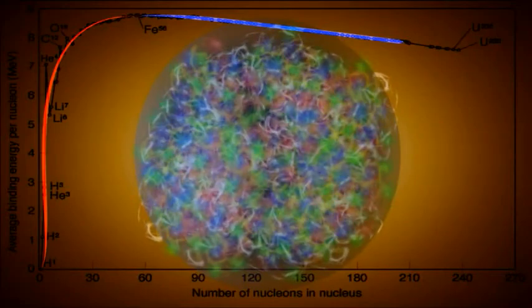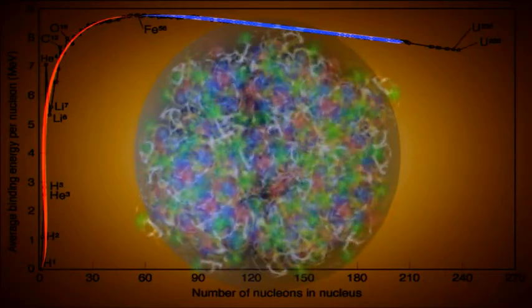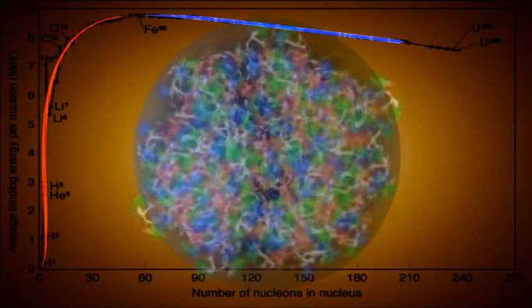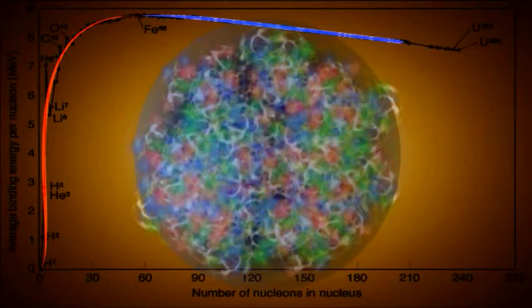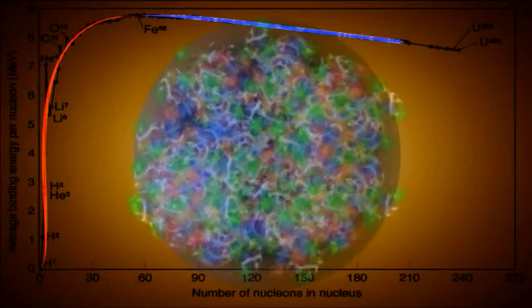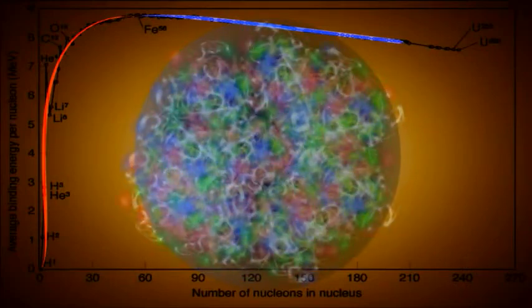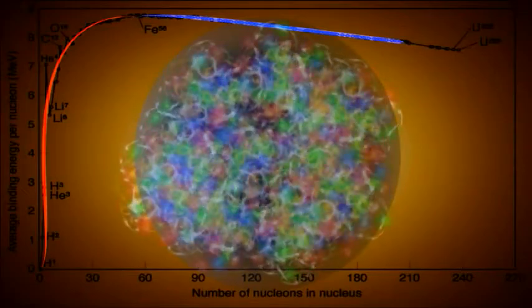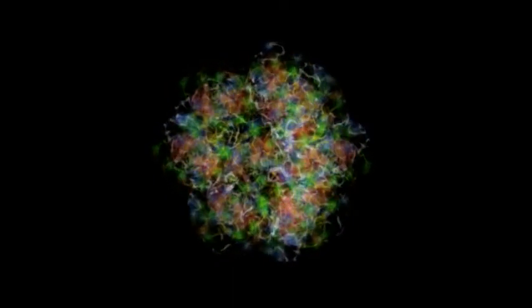When we get to lead and bismuth and uranium, the nucleus contains 207 nucleons. The electric force wins and the atomic nuclei larger than this are unstable and come apart by themselves, although it may take a while.